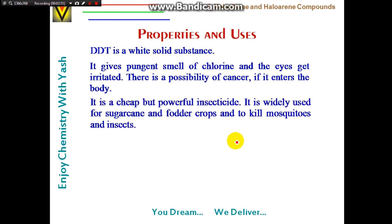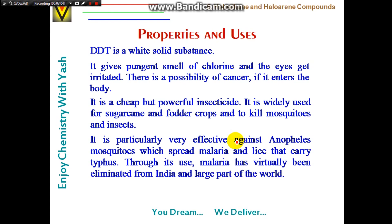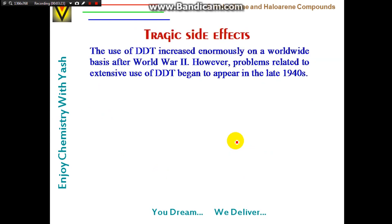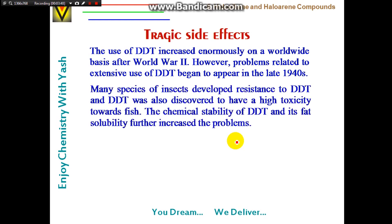DDT is a cheap but powerful insecticide widely used for sugarcane and fodder crops and to kill mosquitoes and insects. It is particularly effective against Anopheles mosquitoes (which spread malaria) and lice that carry typhus — through its use, malaria has virtually been eliminated from India and large parts of the world. However, after World War II its use increased enormously, and by the late 1940s problems appeared: many insect species developed resistance, and DDT was discovered to have high toxicity towards fish.